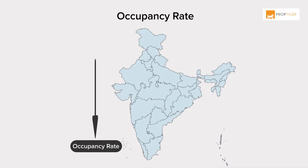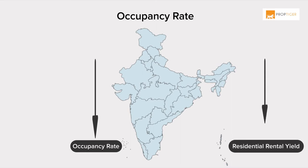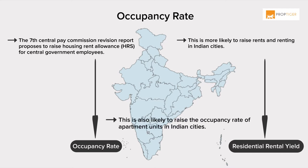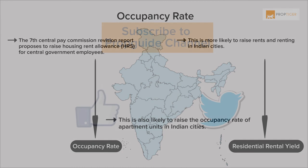One of the major reasons why occupancy rate is low in Indian cities is because residential rental yield in India is relatively low. The 7th Central Pay Commission revision report proposes to raise Housing Rent Allowance (HRA) for central government employees. This is more likely to raise rents and renting in Indian cities, and is also likely to raise the occupancy rate of apartment units in Indian cities.